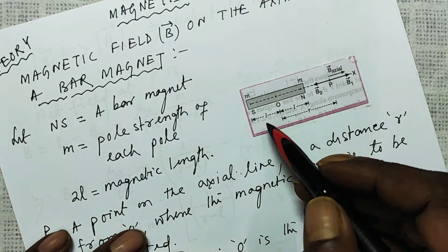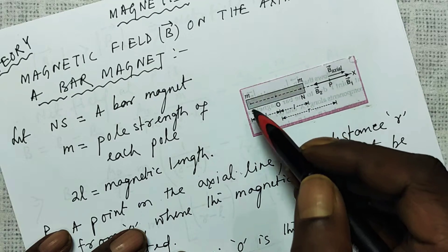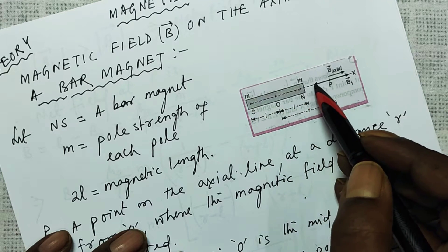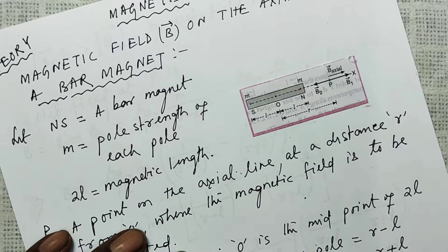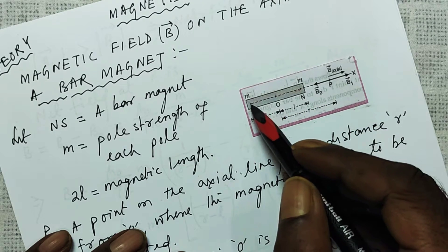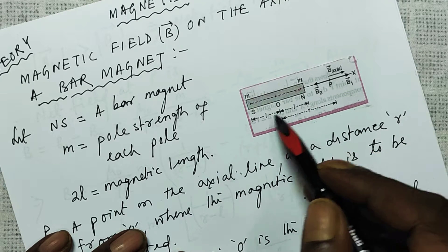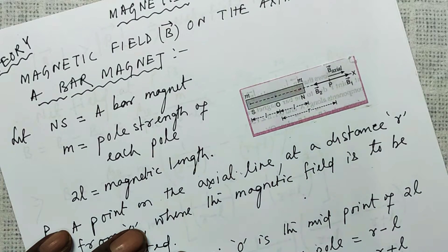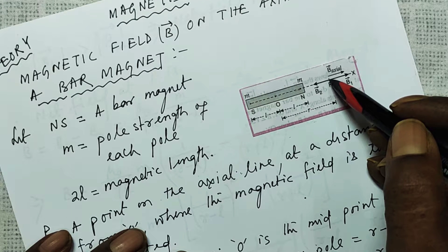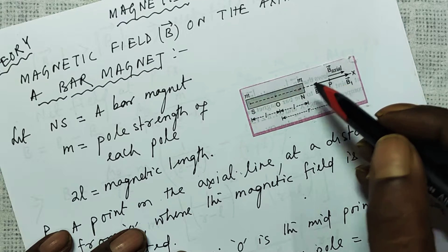As you can see from here, there is a bar magnet. This is the south pole of the magnet, and this is the north pole of the magnet. So this dotted line is the axial line. The magnetic length of the magnet, that is from the south to north, is L plus L, that is 2L. O is the midpoint, and here is a point P on the axial line where we have to find out the magnetic field due to the bar magnet.